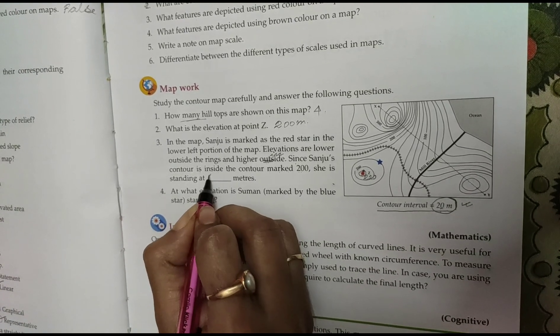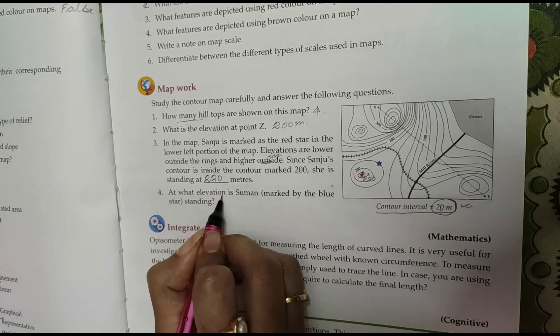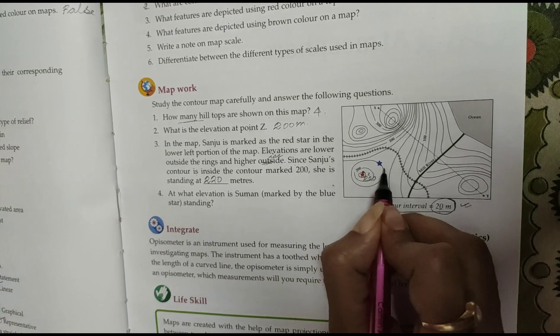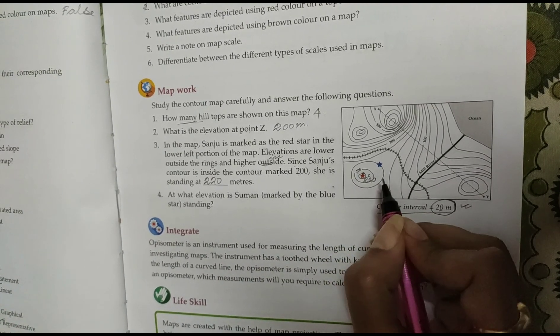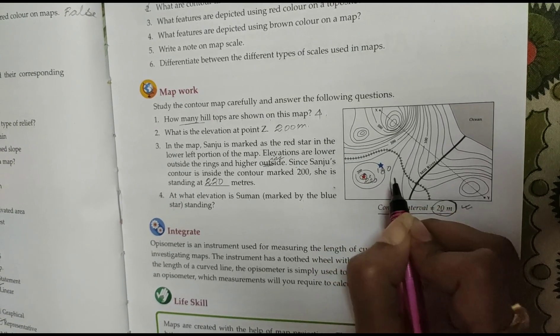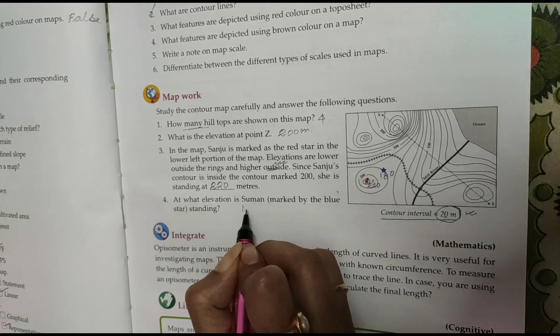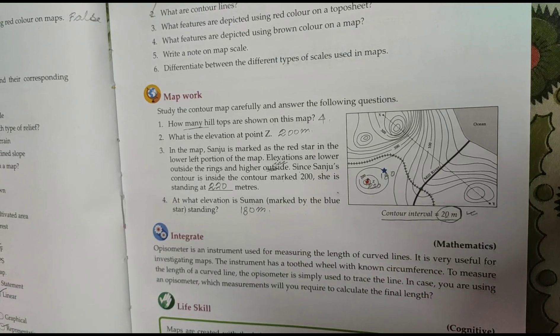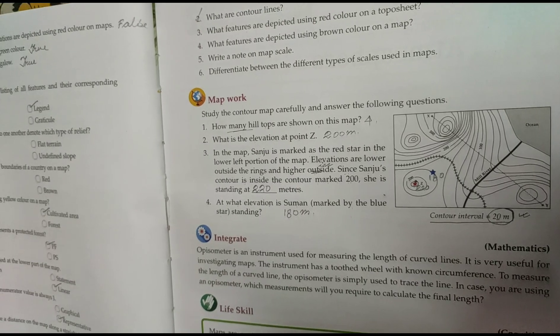At what elevation is Suman marked by the blue star standing? Outside the elevation value is decreasing, so it will be 180. Why? Because 20 meter interval is given, it is 180 meter.